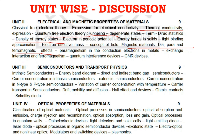Exchange interaction and ferromagnetism are key areas in Unit 2. The tight binding approximation and expression for electron effective mass are also derivation-based questions. In Unit 3, carrier concentration in intrinsic and extrinsic semiconductors is a very important topic and a lot of key areas will be covered there.